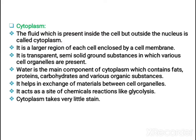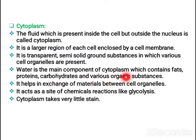Now let us see the cytoplasm. Cytoplasm is the fluid substance present inside the cell but outside the nucleus. It is the larger region. It is a transparent, semi-solid ground substance. In cytoplasm we can observe cell organelles — the organs of the cell — such as mitochondria and chloroplast. Water is the main component of cytoplasm, and it also contains fats, proteins, carbohydrates, and other organic substances. It helps in the exchange of materials between cell organelles.